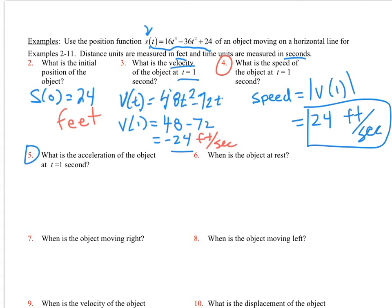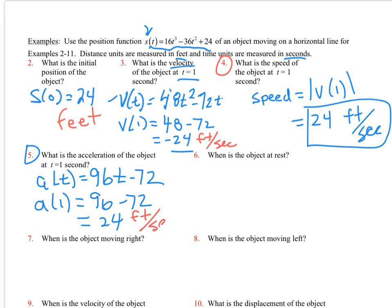Then number 5. What is the acceleration of the object at T equal to 1? Well, I must go ahead and find A of T. A of T is going to be the derivative of my velocity up here. So I'm going to get 96 T minus 72. And then if I do A of 1, that is just going to be 96 minus 72. If I can add and subtract here, oh my goodness, 24. The question is, is what units do I put on this? Well, now this is the rate of change of the rate of change. So I've taken feet per second and I've divided by more seconds.